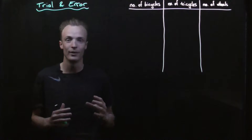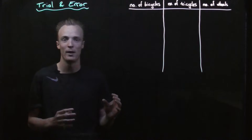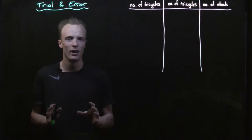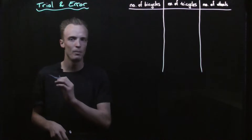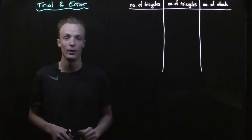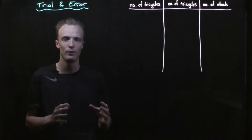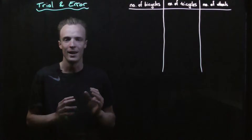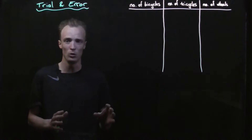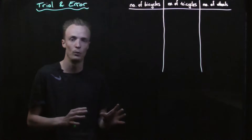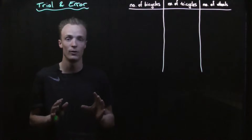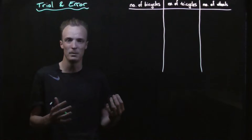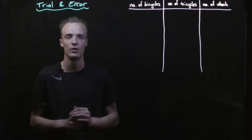How did you go with finding the solution to our bicycle problem? If you haven't found one yet, I'd like you to go back to the previous video and have a go at finding a solution for yourself. In this video I'm going to look at two ways we could use to find the solution and discuss the benefits and limitations of each.